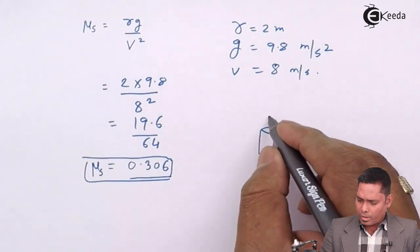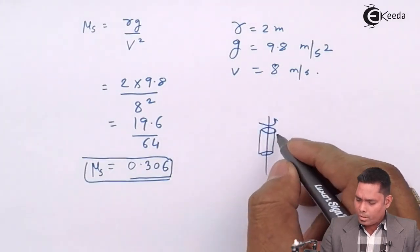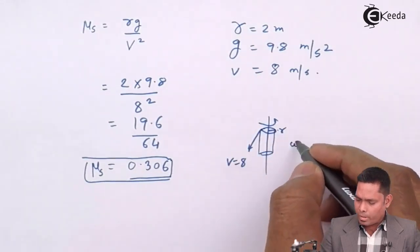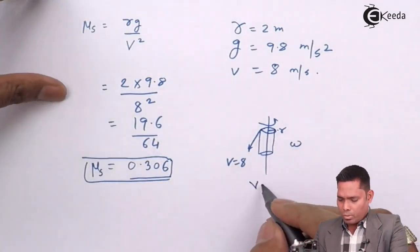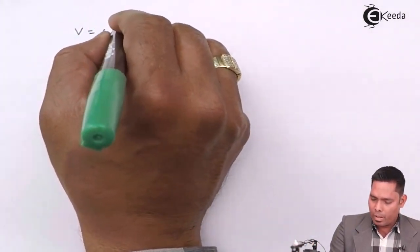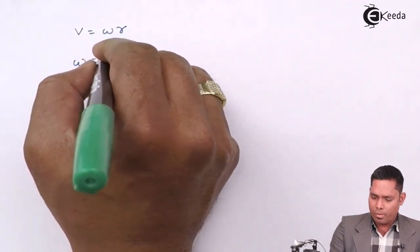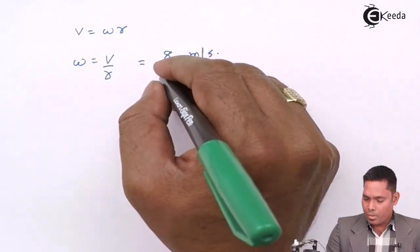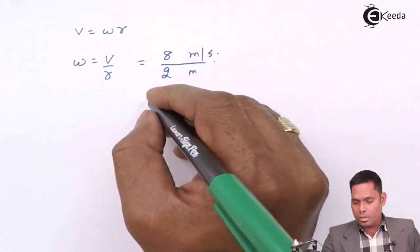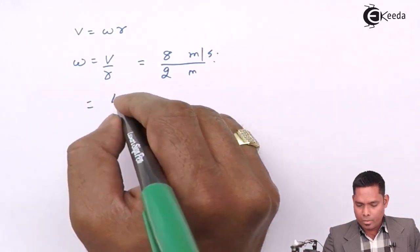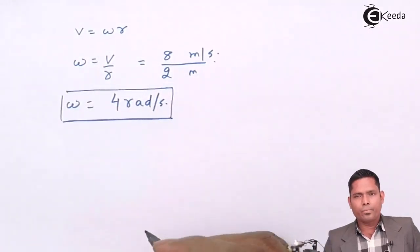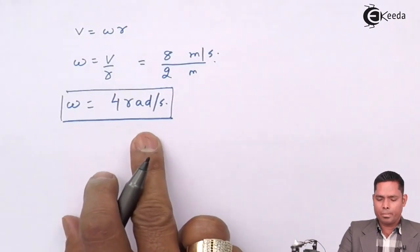Next, we find the angular velocity of the drum. Using v = ωr, we get ω = v/r = 8/2 = 4 radians per second. This is the answer to the second part of the question — the angular velocity is 4 radians per second.